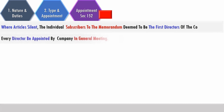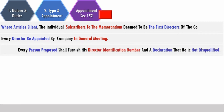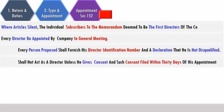Every director shall be appointed by the company in a general meeting. Every person proposed as a director shall furnish their director identification number and a declaration that they are not disqualified, and shall also give their consent. Such consent must be filed within 30 days of appointment.